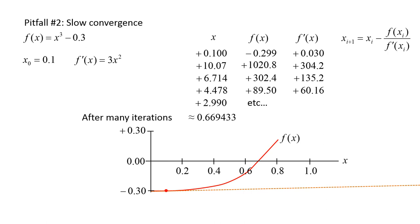If we chose a better initial guess for the root, say 1.1 instead of 0.1, we would have converged to the root much faster. Conversely, we could have selected a worse value for the initial guess, such as 0.001, which would have resulted in much slower convergence.